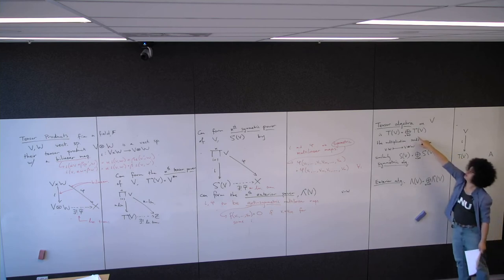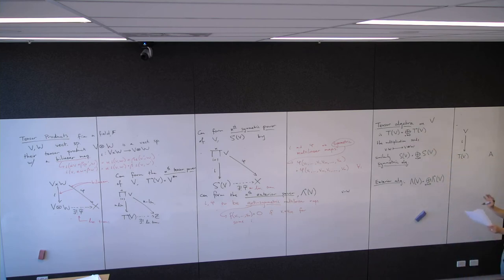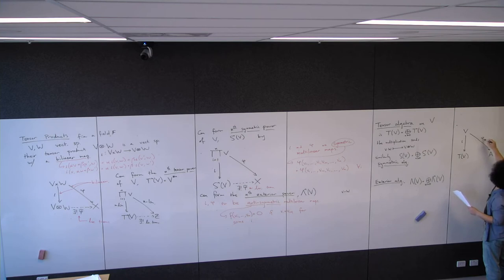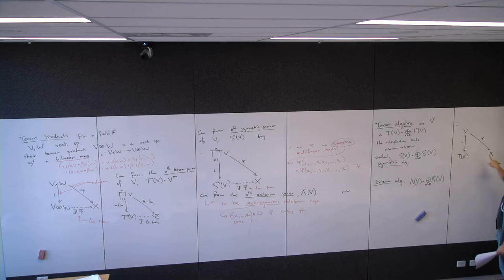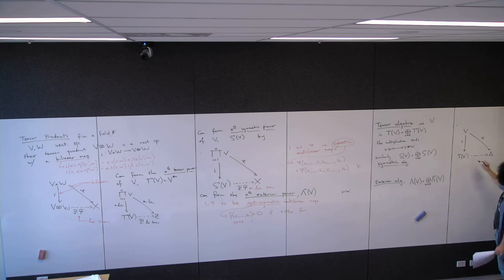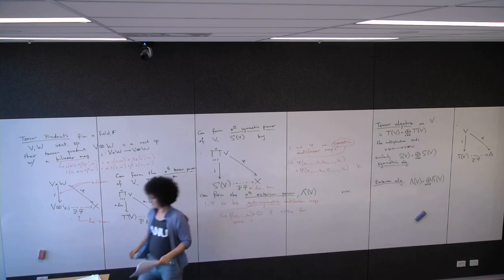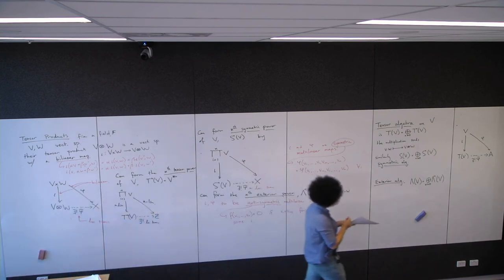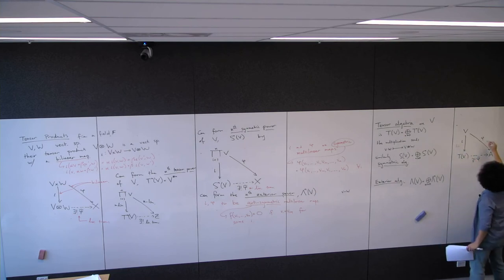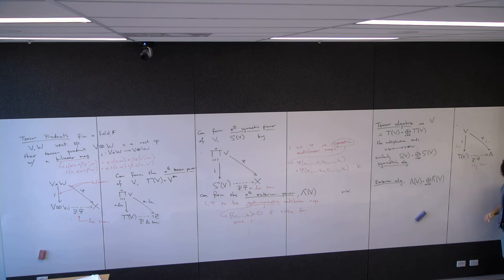T(V) comes with an iota, which is just inclusion into T^1(V) since the first tensor power is just a copy of the vector space. Given any other linear map from V into A, because A is an algebra (a vector space) and V is just a vector space, there is a unique algebra homomorphism such that this diagram commutes.